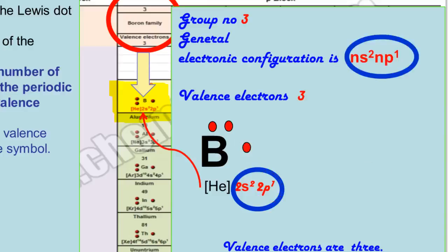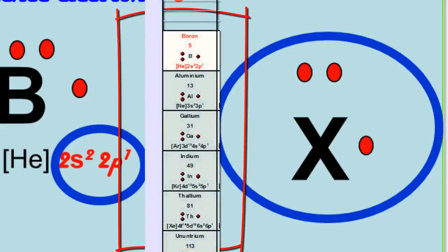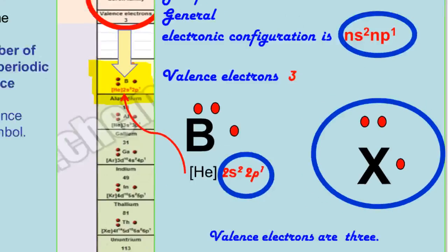All these elements can be represented by a symbol X. X can be the symbol of any element from group 3. 2 electrons as a pair are represented as 2 dots and 1 electron in the p orbital as a single electron. This is the general Lewis dot representation of all elements of group 3.